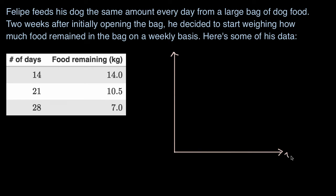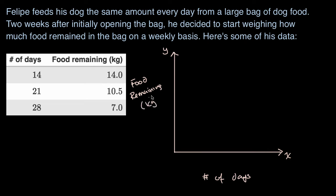So this is my x-axis, this is my y-axis. I'm going to make the x-axis measure the passage of days — number of days on the x-axis. And on the y-axis I'm going to measure food remaining, in kilograms. Let's make this scale go up to 5, 10, 15, 20, and then 25 — I think this will be sufficient.